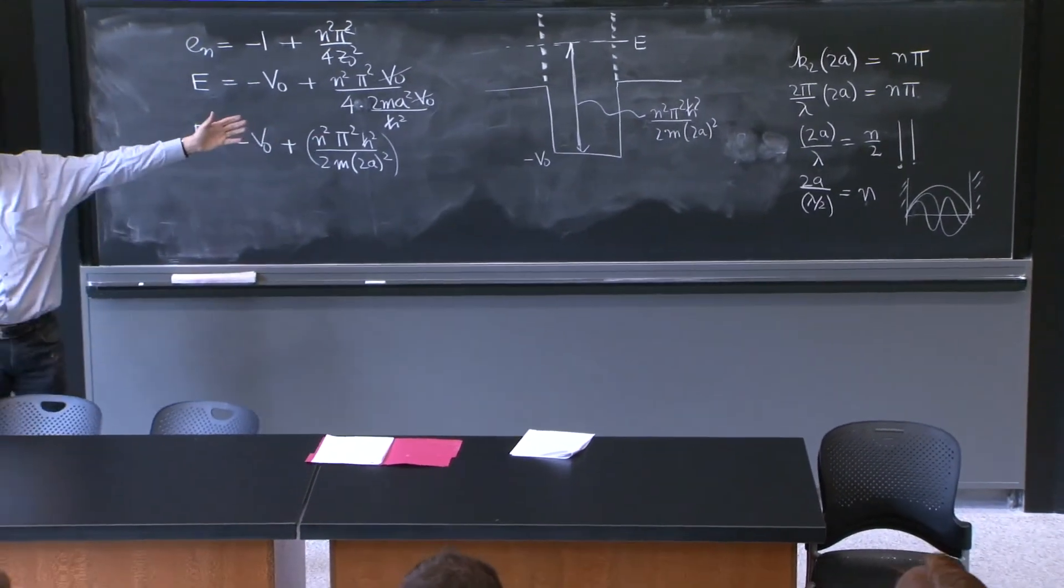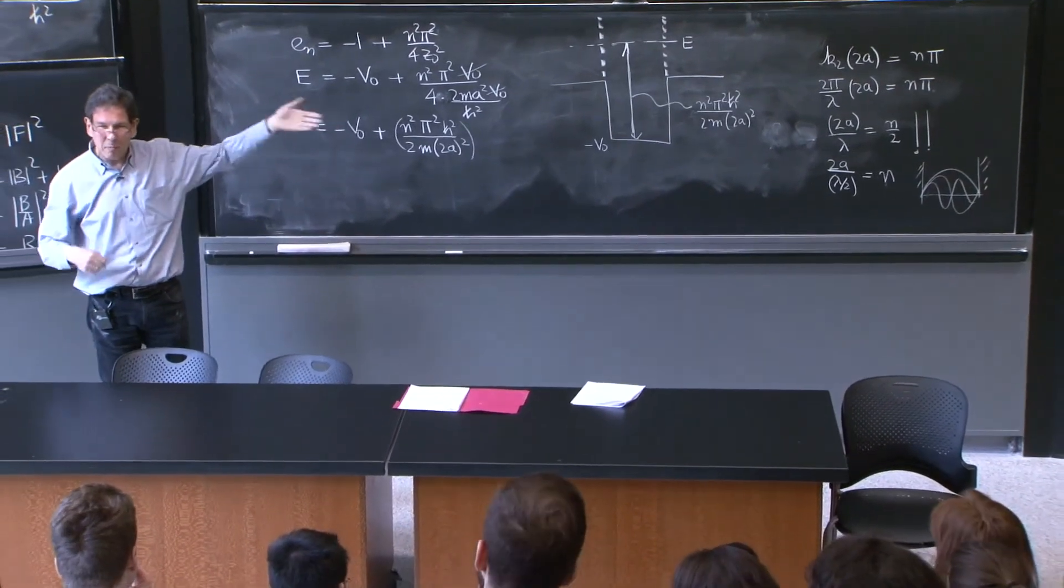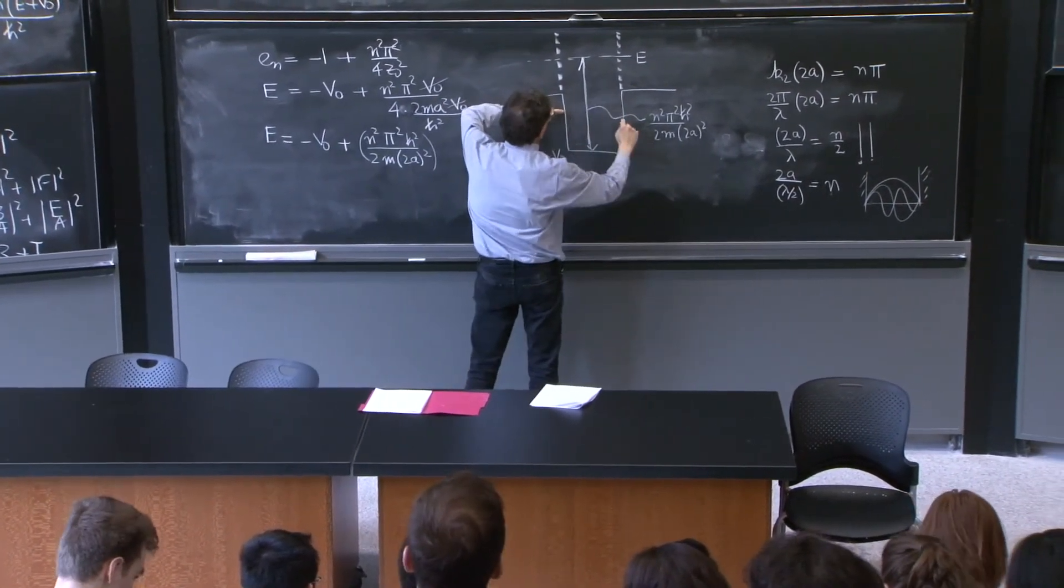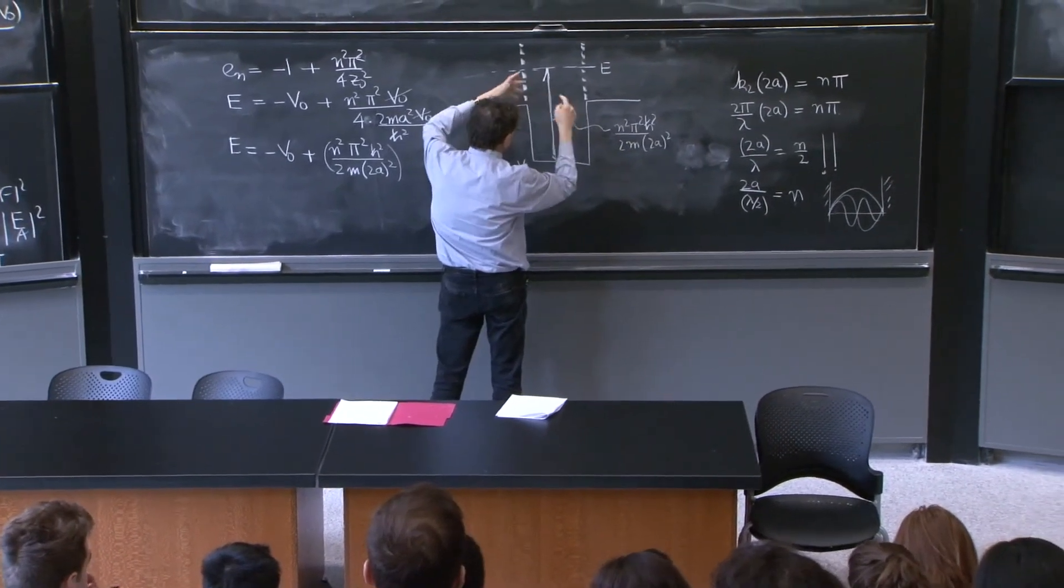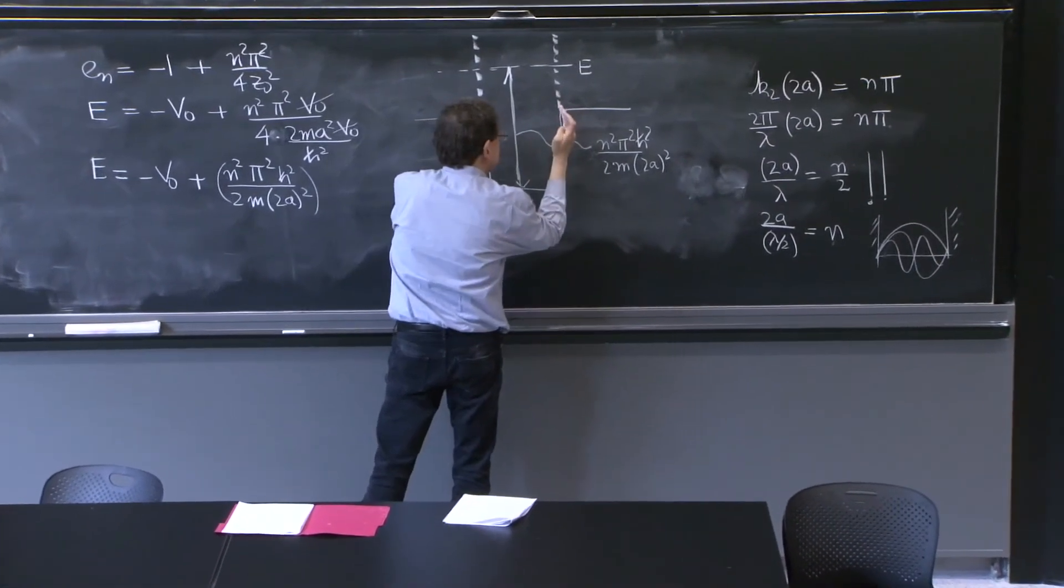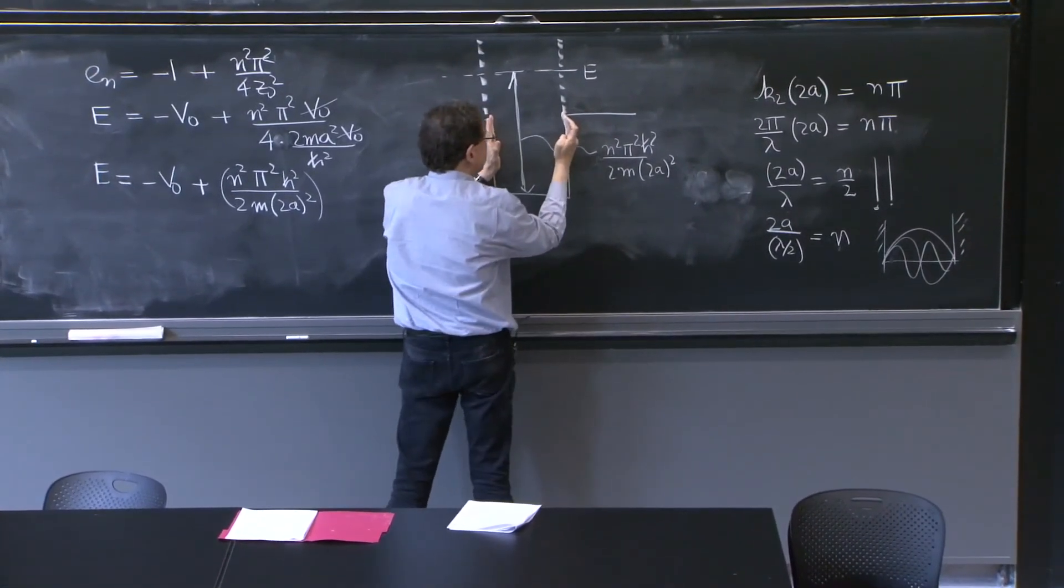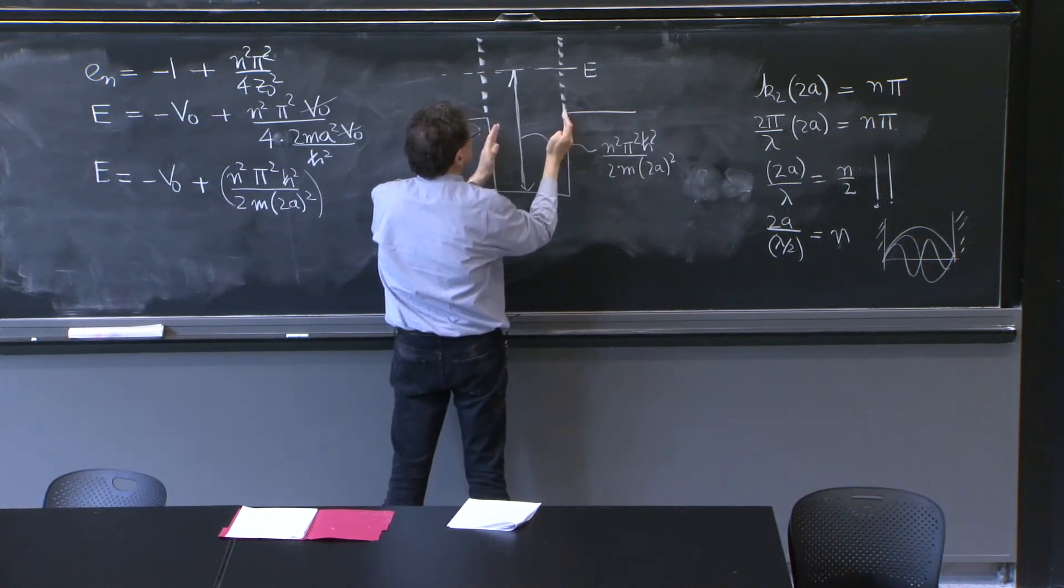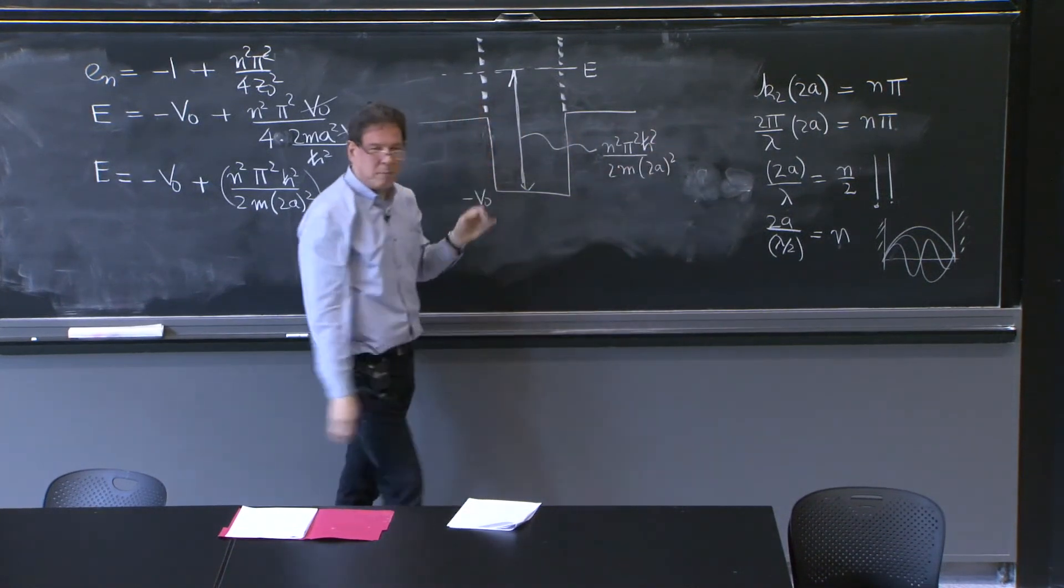which is precisely the condition for an infinite square well energy eigenstate. So there's no infinite square well anywhere in this problem. But somehow, when the wavelength of the de Broglie representation of the particle in this region is an exact number of half waves, there's resonance.